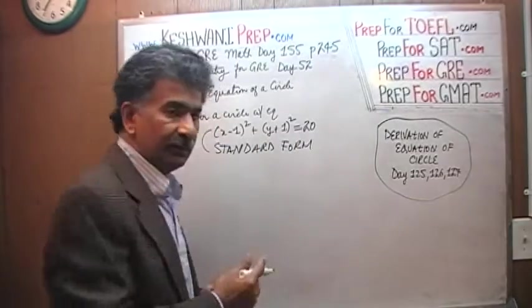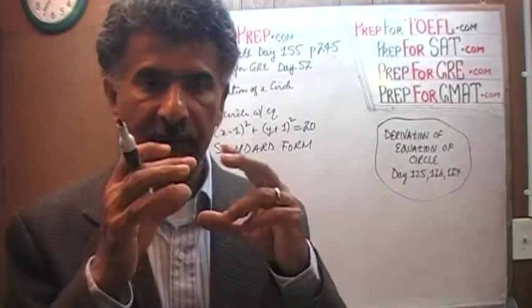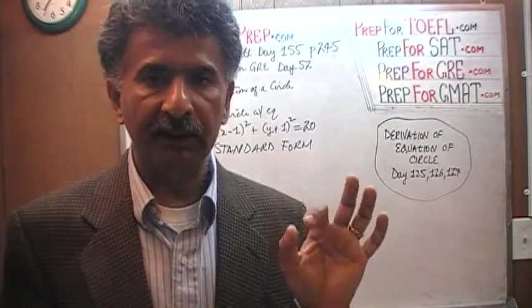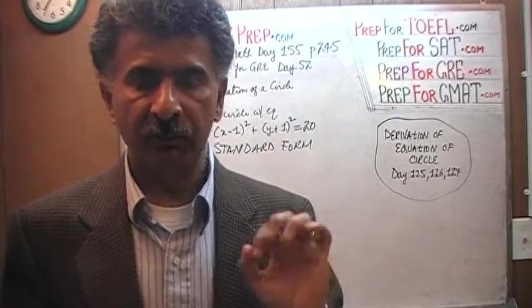This equation that you see there is written in what is known as a standard form. Just like we have been doing equation of a line where the equation of a line is written in a certain standard form, just by visual inspection you can tell what the slope of the line is, you can tell what the y-intercept is and so on and so forth.